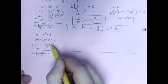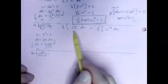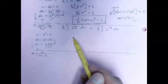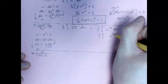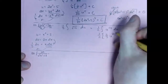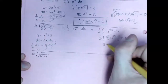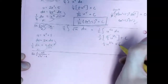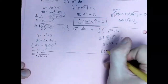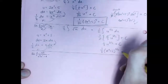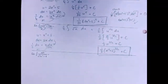Switch it all over: X DX becomes 1/2 DU, and the square root of the chunk becomes the square root of U, which I rewrite as U to the 1/2 power. Now I can integrate using power rule: add 1 to the exponent and divide by the new number. The two halves cancel, giving 1/3 U to the 3/2 plus C. Then reverse substitute back to X: 1/3 times X squared plus 3 to the 3/2 plus C. You can check it by taking the derivative.